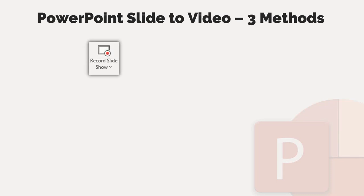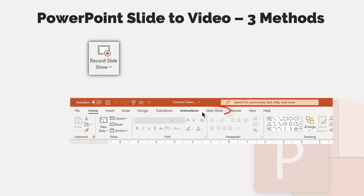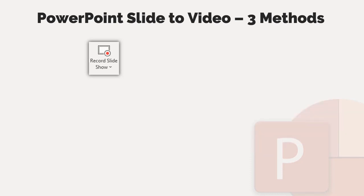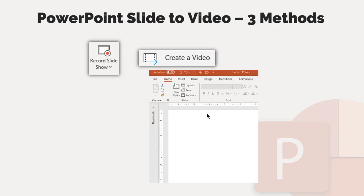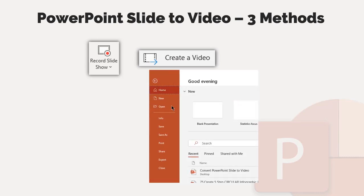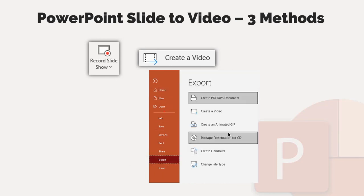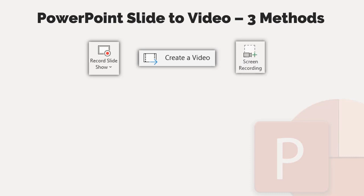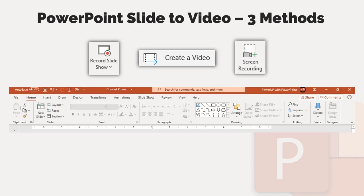The first method is using Record Slideshow, and this option can be found under the Slideshow tab. The second method is using Create a Video, and this option can be found under the Export section of the main File menu. The third method is using Screen Recording, and this option can be found under the Insert tab.